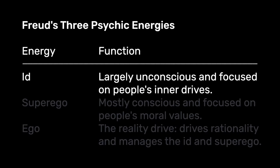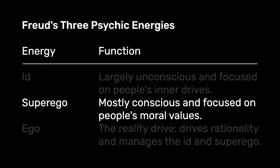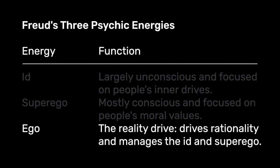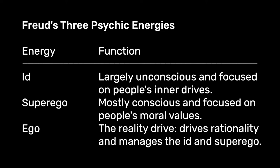Many of these conflicts came from the three psychological parts of a person, which he called psychic energies. The id, which is largely unconscious, focusing on the drives people have. You have the superego, which is about someone's moral values — basically someone's conscience — and this is mostly conscious. And you also have the ego, which is the reality drive according to Freud, about being rational, acting as the manager between the superego and the id. People's behavior is a function of these things competing with each other, and a lot of the misfunctioning occurs because people have early childhood experiences that are drawn through to the present.